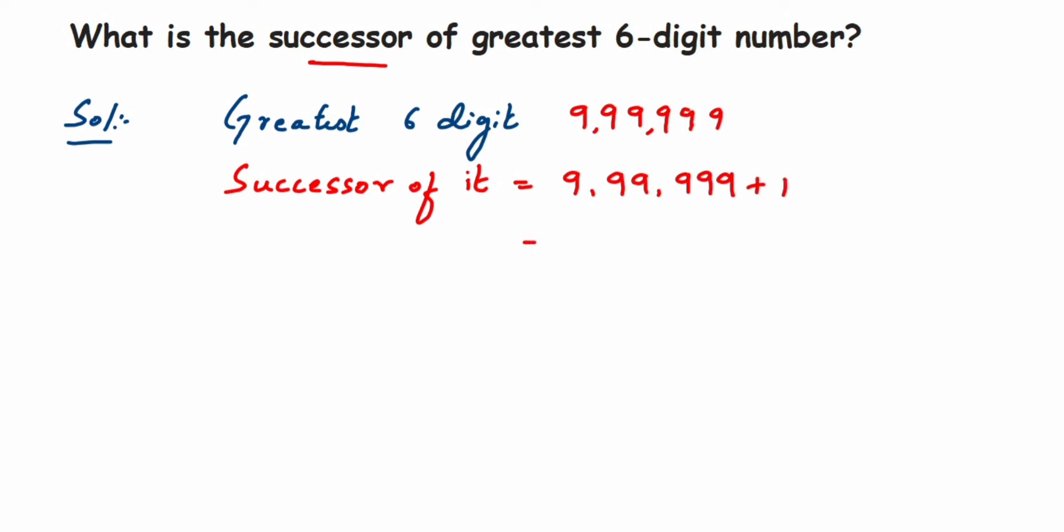So here we will get 10 lakh. 10 lakh has seven digits here, and this number 10 lakh is the smallest seven-digit number. So this was a simple question. I hope it's clear. In case you have a question or doubt, you can drop a comment below. Thank you so much for watching.